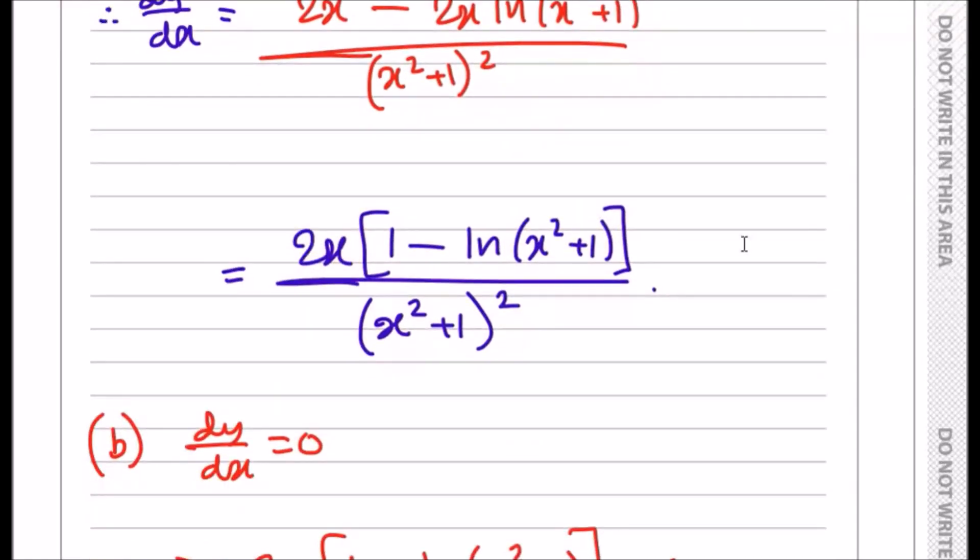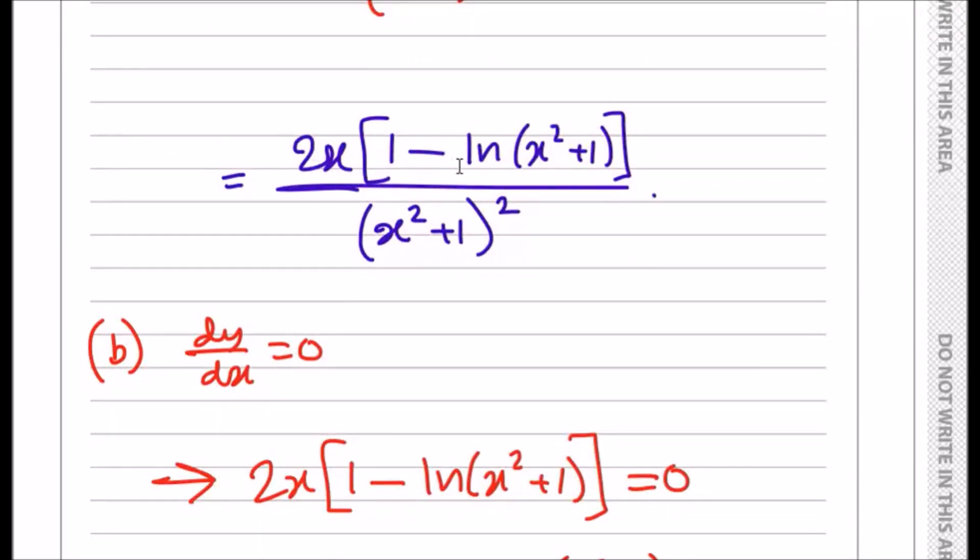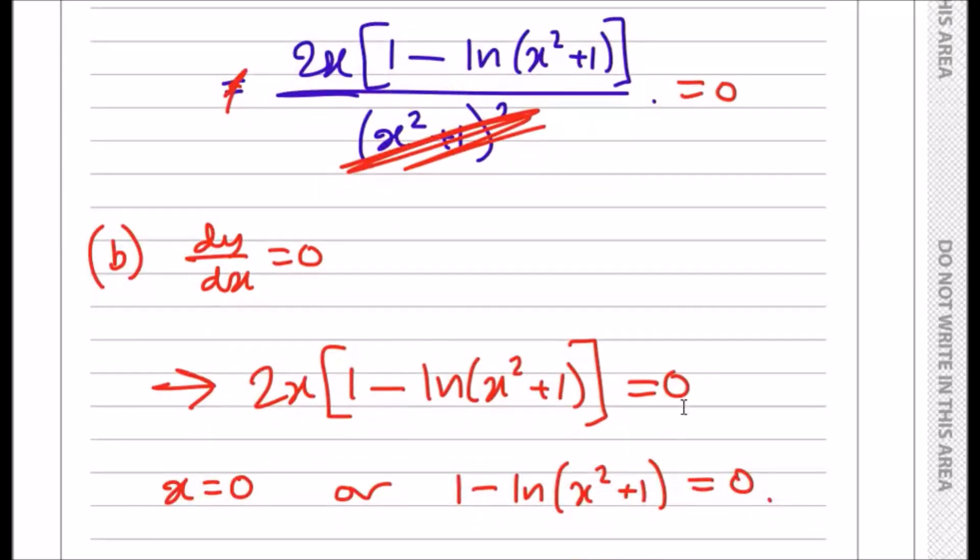So make it equal to zero. When you do that, just remember that when this is set to zero, you can immediately cancel out every denominator fraction because multiplying across and times by zero gives you zero. So the only thing you have left is the top line set to zero. The first solution would be 2x equals zero.